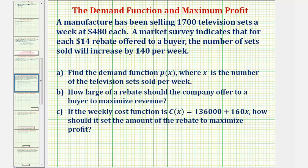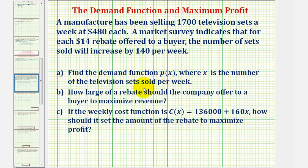A manufacturer has been selling 1,700 television sets a week at $480 each. A market survey indicates that for each $14 rebate offered to a buyer, the number of sets sold will increase by 140 per week. Part A: find the demand function P of X, where X is the number of television sets sold per week.